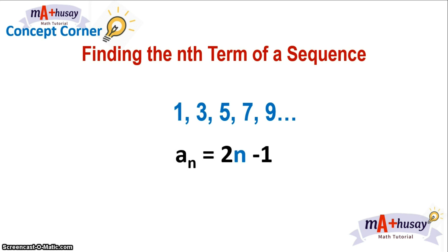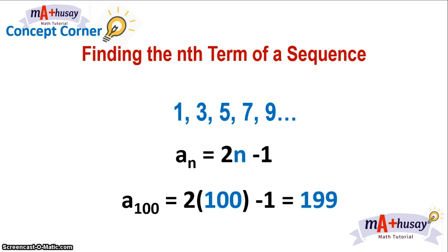Since we want to find a sub 100, and this sequence is represented by the function a sub n equals 2n minus 1, we substitute 100 for n. So a sub 100 is equal to 2 times 100, that's 200, minus 1, which gives you 199. Therefore, the 100th term of the sequence is 199.